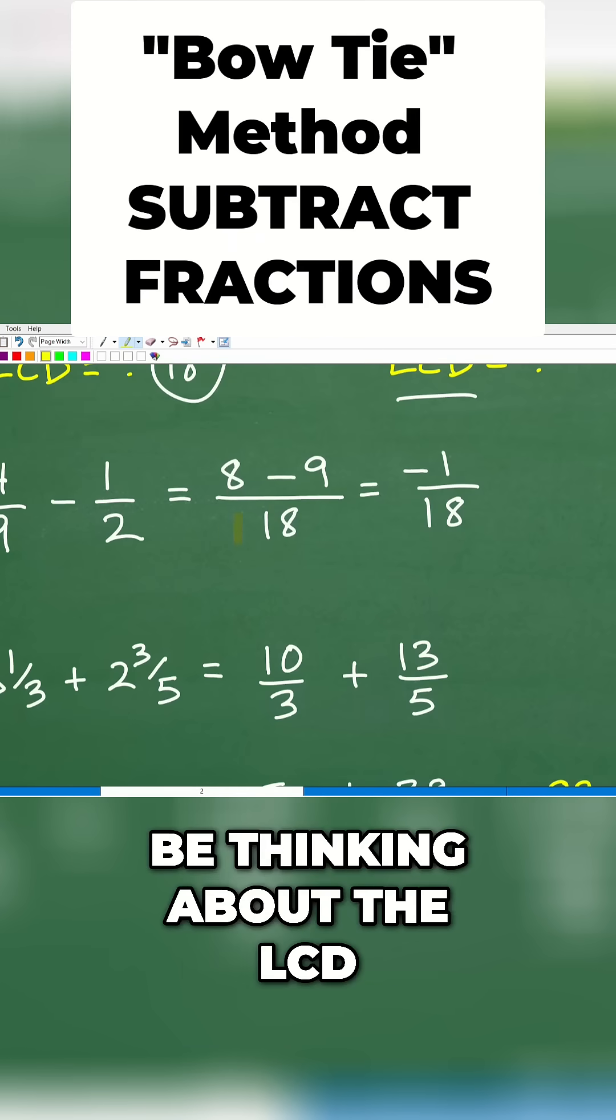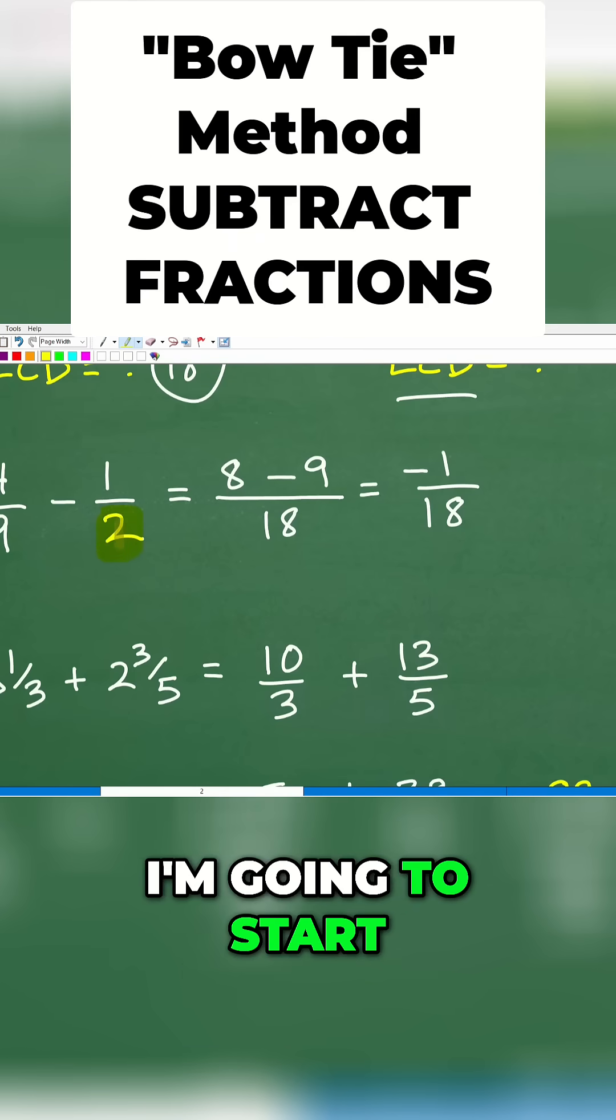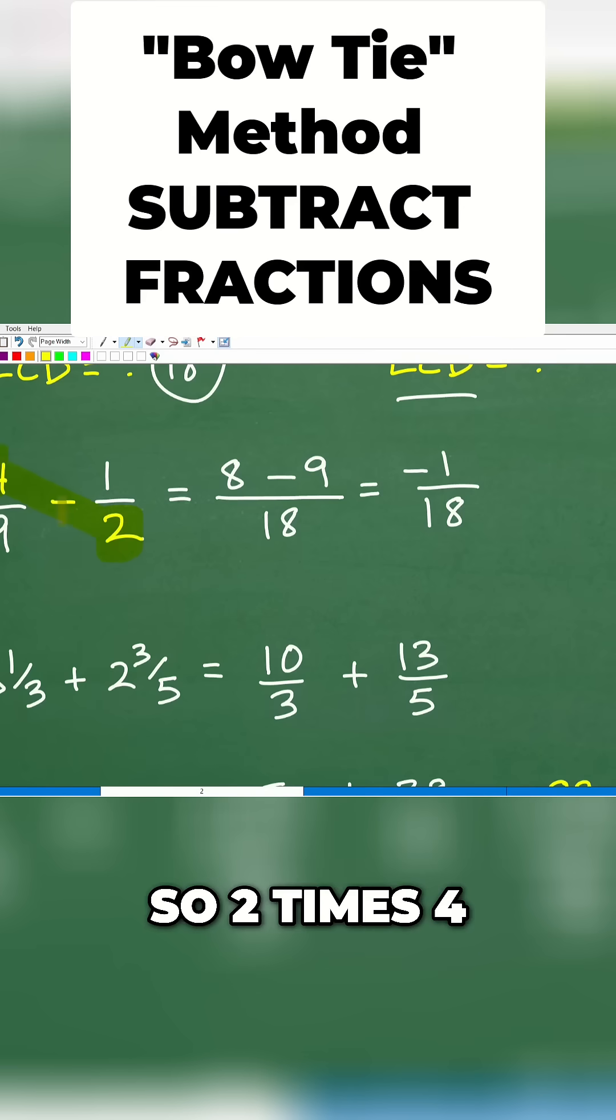We're not going to be thinking about the LCD. We're going to start from the bottom right. I'm going to multiply it this way. So 2 times 4, that's 8.